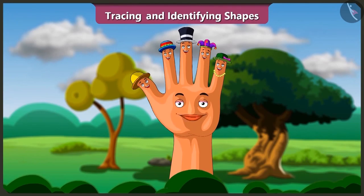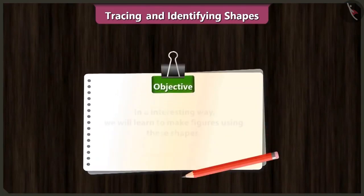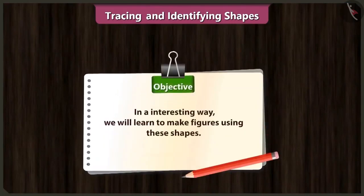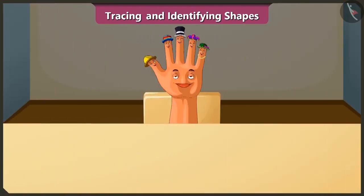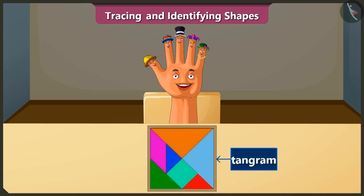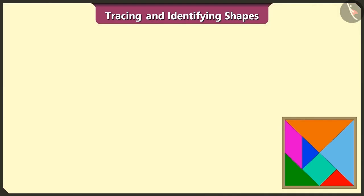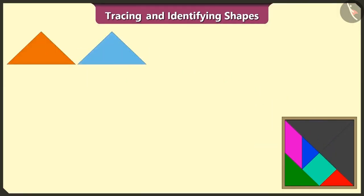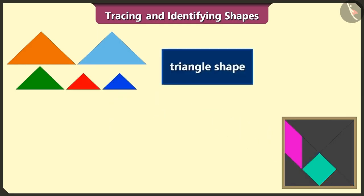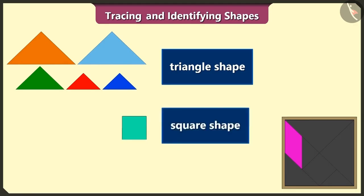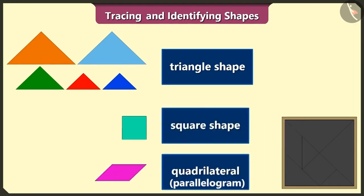Friends, we have learned to identify and trace shapes. Today, in an interesting way, we will learn to make figures using these shapes. This is a tangram. There are a total of seven shapes in it. This tangram is made of one, two, three, four, and five triangle shapes, one square shape, and one quadrilateral.